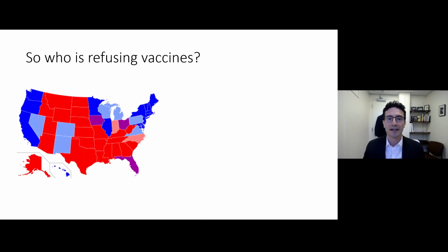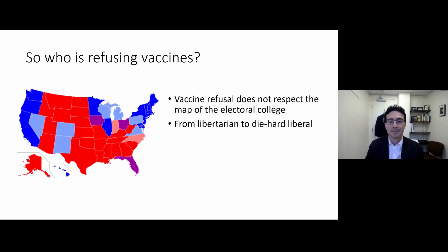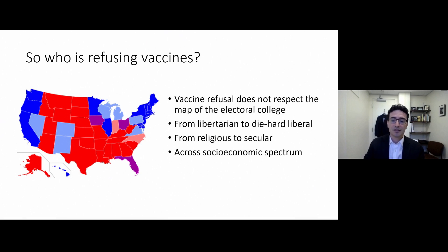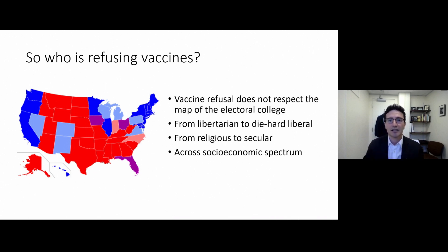So who is refusing vaccines? In a country where everything seems to divide along political lines, it's interesting to note that vaccine hesitancy and refusal does not fall along political lines. We see libertarians refusing vaccines, diehard liberals, religious groups, secular groups — it spans the socioeconomic spectrum. When we think about vaccine refusal, it's important to think about this as a heterogeneous group with different reasons. To increase vaccination rates across the population, we might need different interventions for different populations.